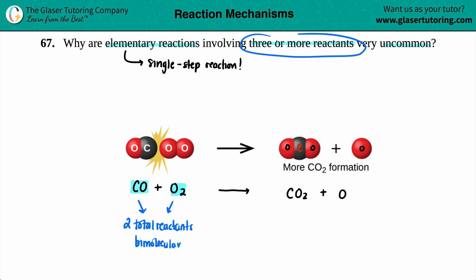But now the question's asking, well, why can't we have three or more reactants coming together? Why are those very uncommon? Your unimolecular reactions and your bimolecular, so either having one reactant or two reactants, they're pretty common.